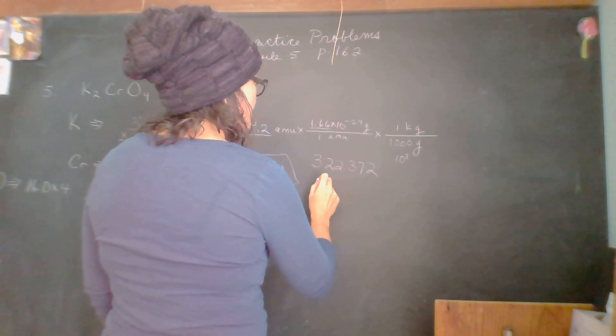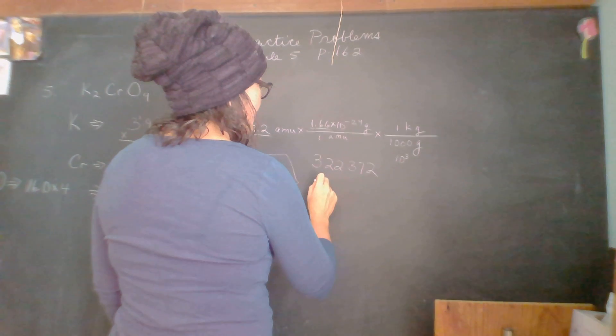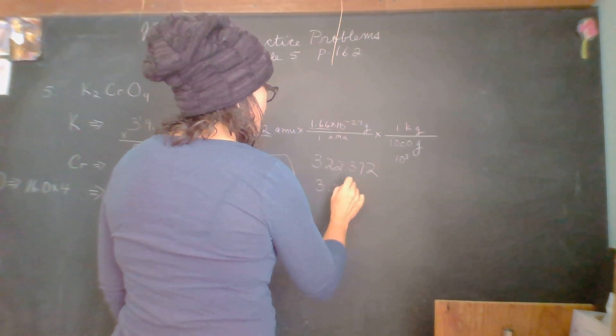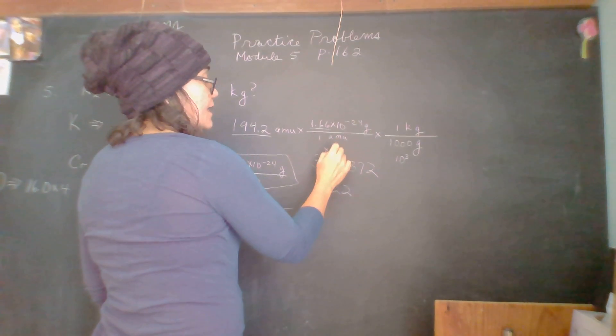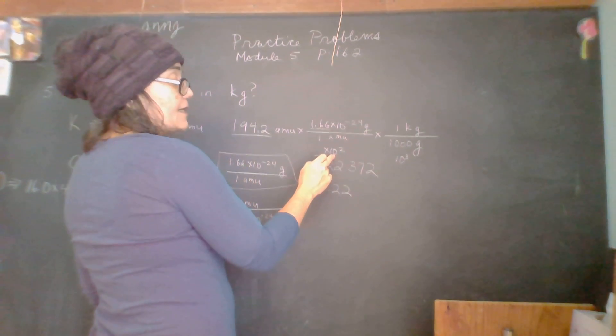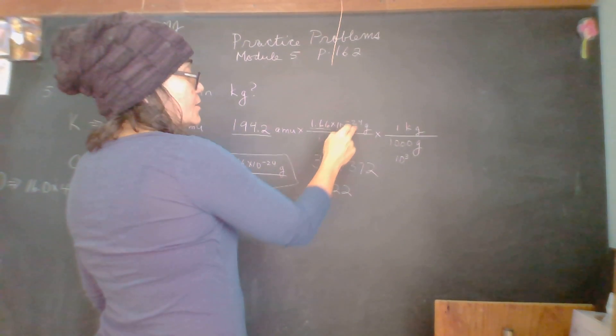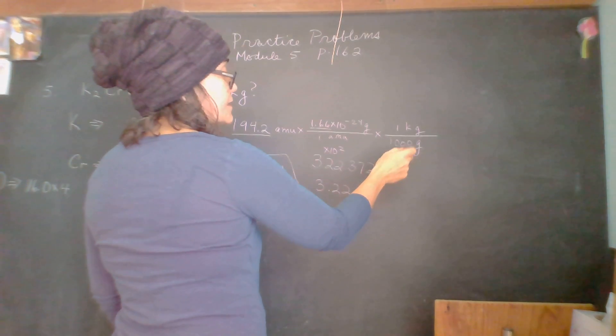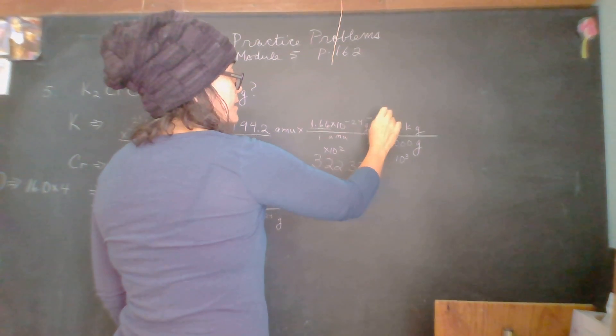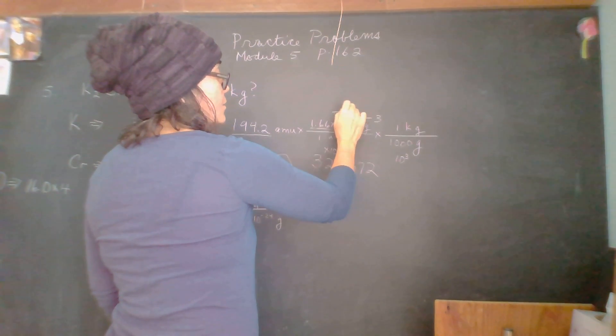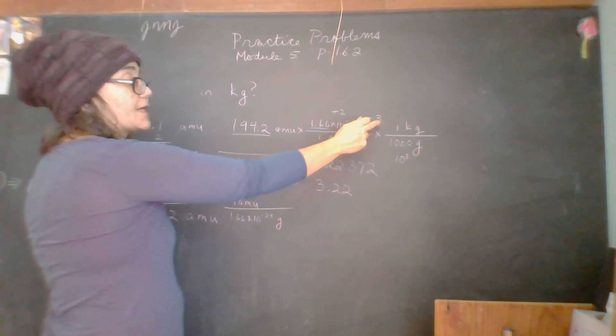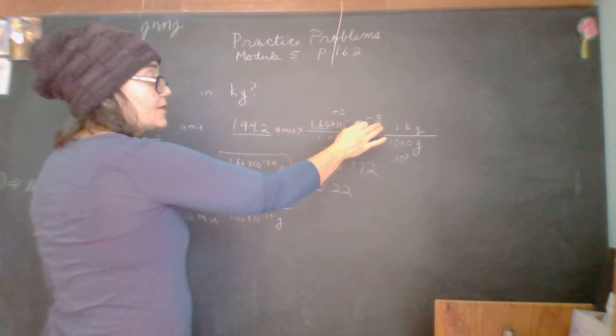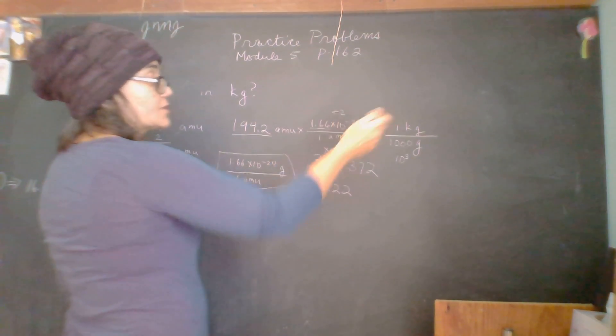So we're going to say it's 3.22. Right? So 3.22. That's the same as 3.22 times 10 to the second. Right? Yeah. So we're going to, this is the same as minus 3 plus 2. Right? So this is what we got here. Right? 24 minus 3, as you said, is minus 27 plus 2 is minus 25.